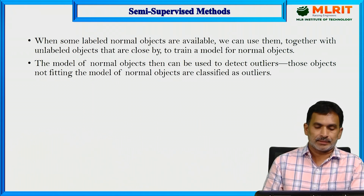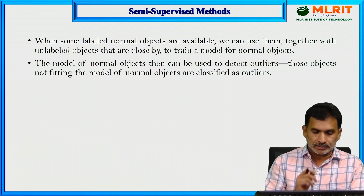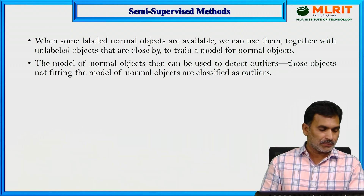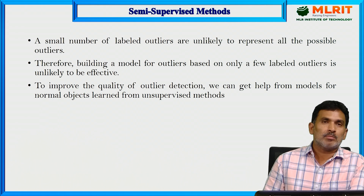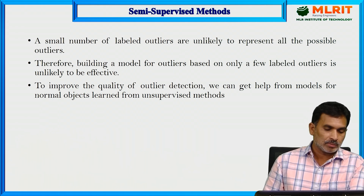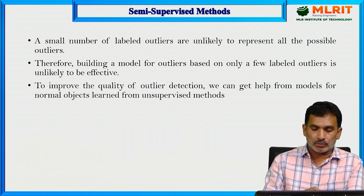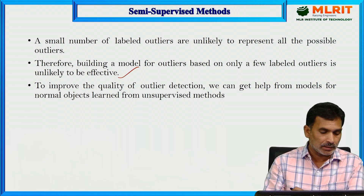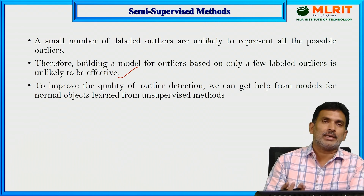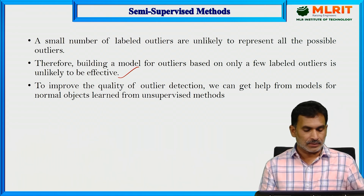When some labeled normal objects are available, we can use them together with unlabeled objects that are close by to train a model for normal objects. Objects not fitting the model of normal objects are classified as outliers. A small number of labeled outliers is unlikely to represent all possible outliers, so building a model based only on a few labeled outliers is not effective. To improve quality, we can get help from models for normal objects learned from unsupervised methods.